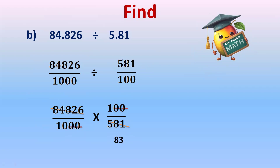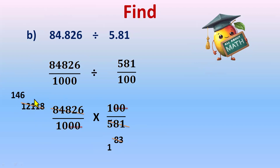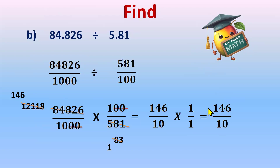Next, divide 581 and 84826 by 7: 581 divided by 7 equals 83, and 84826 divided by 7 equals 12118. Then divide 12118 by 83: 83 times 146 equals 12118, so we get 146 in the numerator and 10 in the denominator. That gives 146 over 10. Converting this fraction to a decimal — there will be one digit after the decimal — so our answer is 14.6.